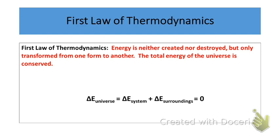By definition, energy is neither created nor destroyed, but is only transferred from one form to another, which simply means that the total amount of energy in the universe must be conserved. This is somewhat similar to the law of conservation of mass, which states that matter is conserved during the course of a chemical process. And now we're going to look at the fact that energy is also conserved during a chemical or physical process or change.